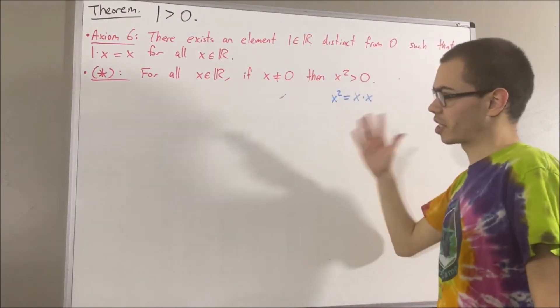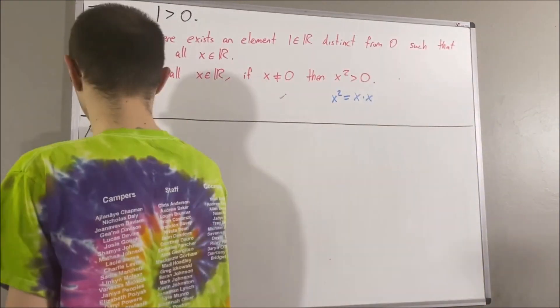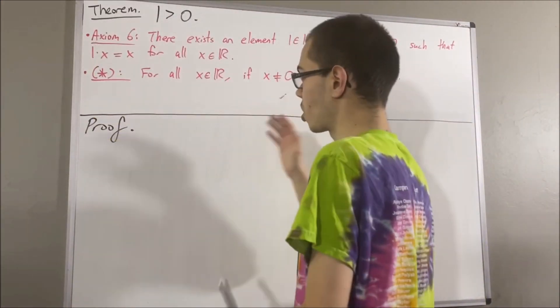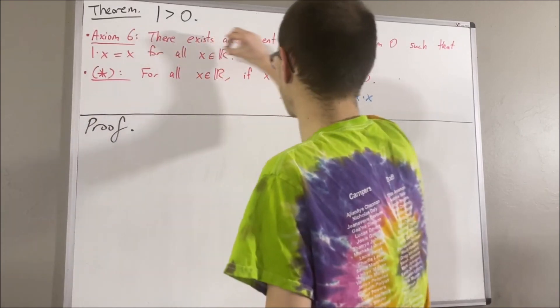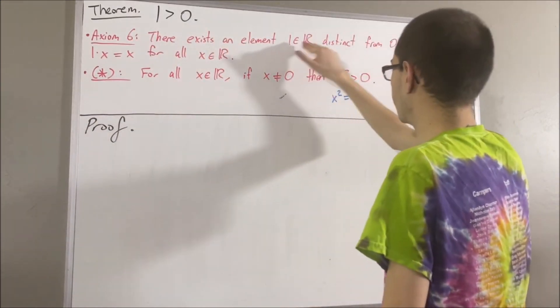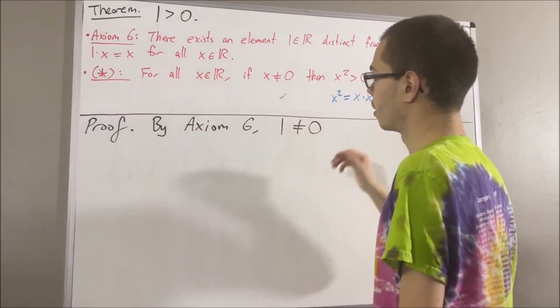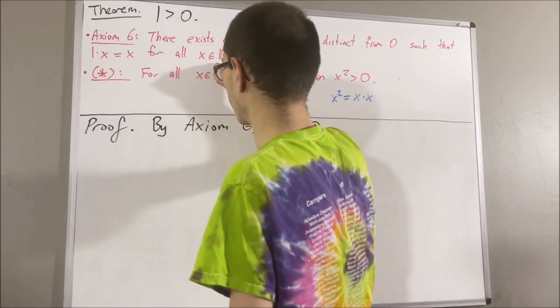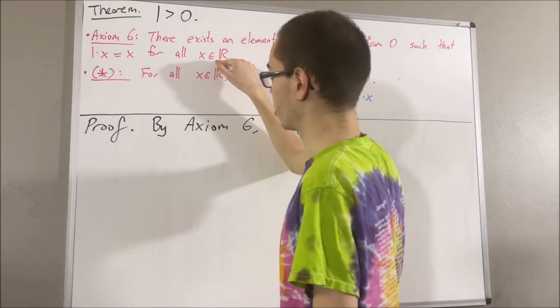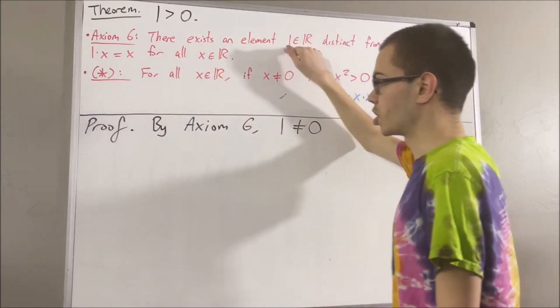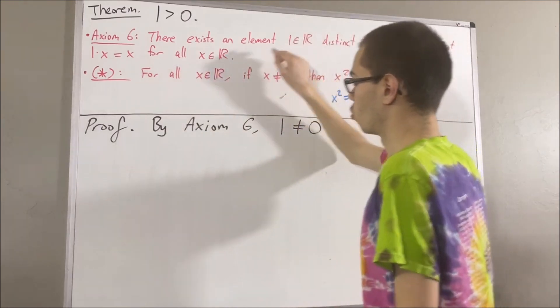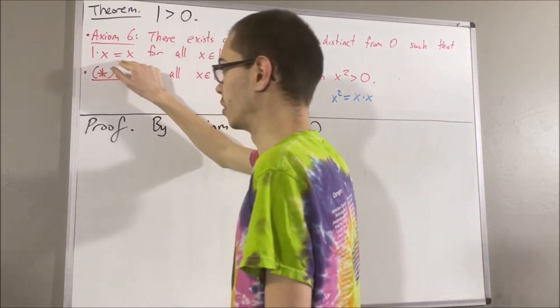Now let's get into proving this theorem. To start the proof, let's first note by Axiom 6 that 1 is not equal to 0. This property works for every real number, so in particular, it must work for the real number 1. So taking x to be 1, we have 1 times 1 is equal to 1.